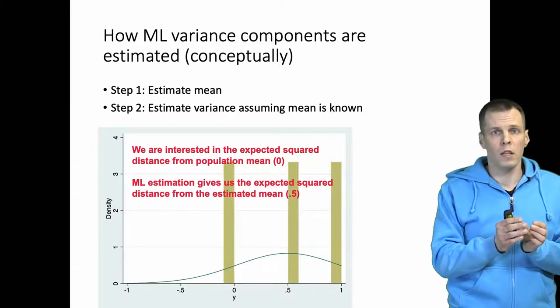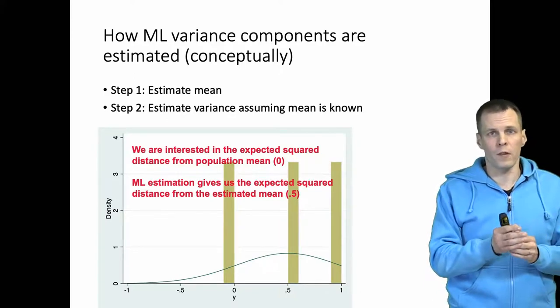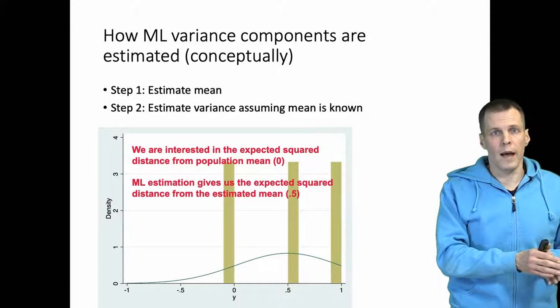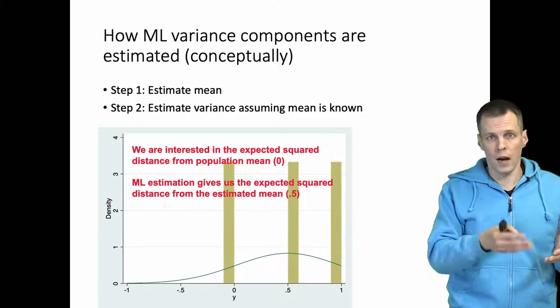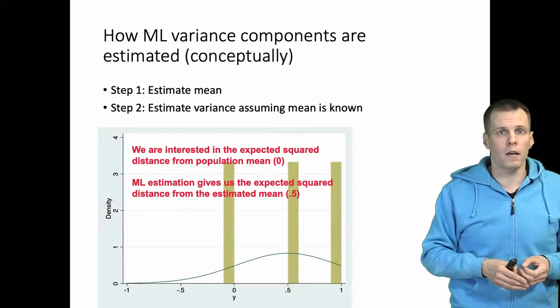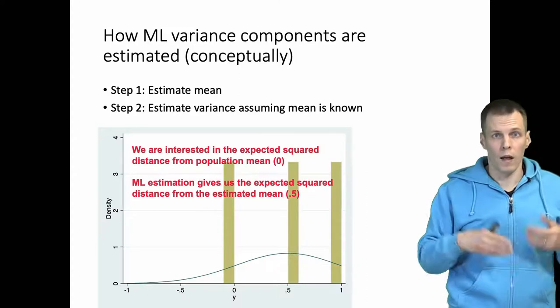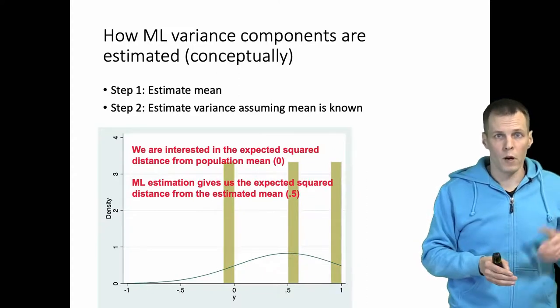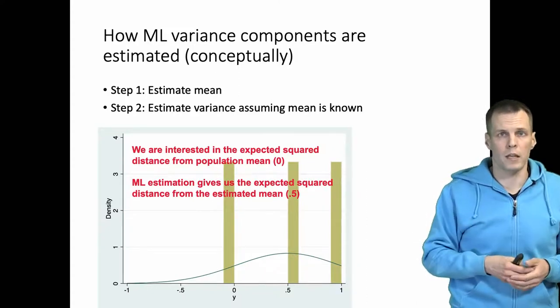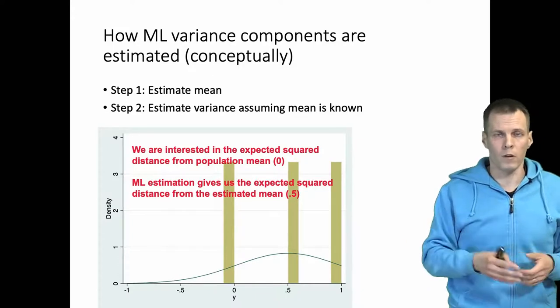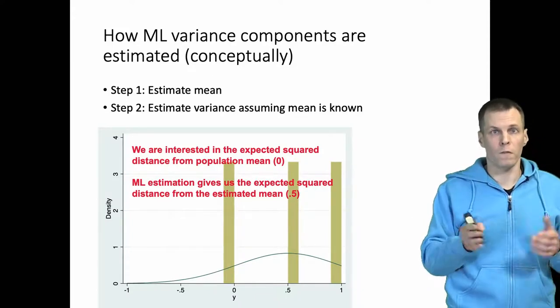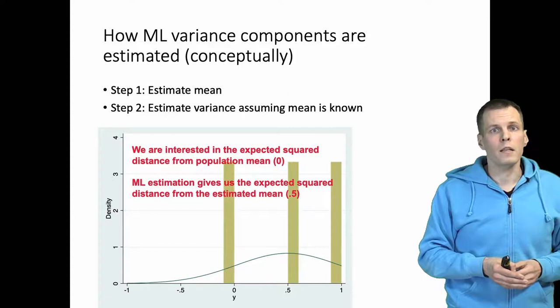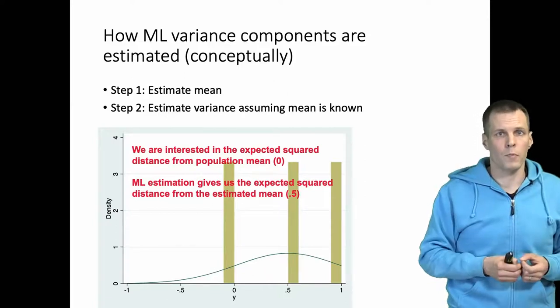So if we have observations that are, let's say the population mean is zero and we have observations, let's say five, six, and seven, then we would have lots of variation because we square five, six, and seven, we take the expected value, gives us something in the ballpark of 40 to 50.